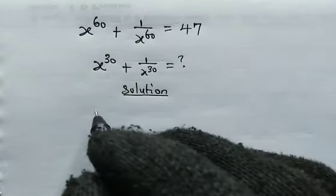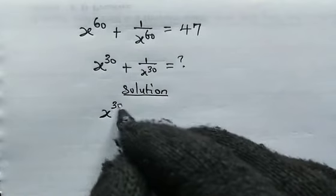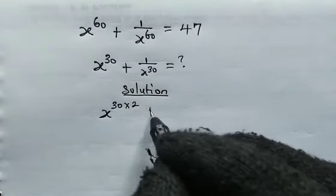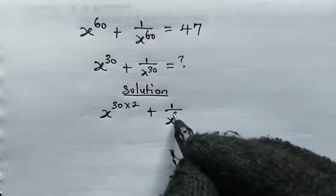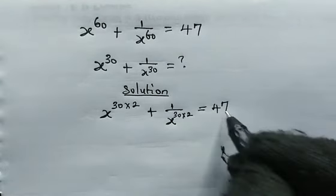From the given equation, we can actually write it as x to the power of 30 multiplied by 2 plus 1 over x to the power of 30 multiplied by 2 and this is equal to 47.